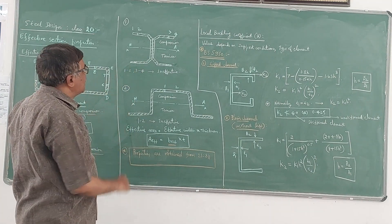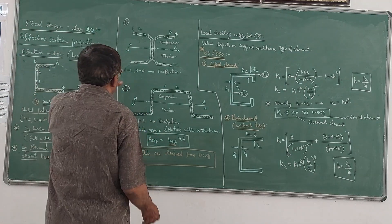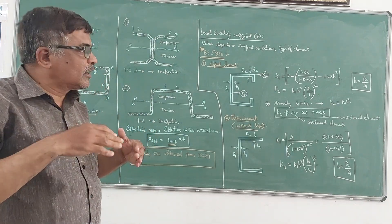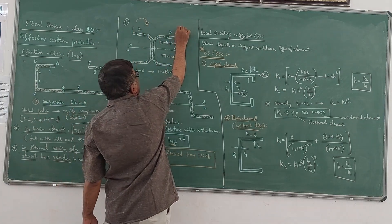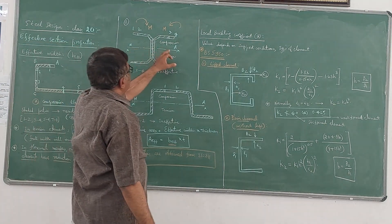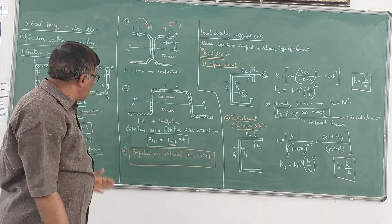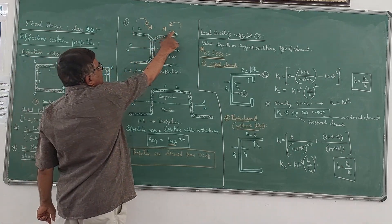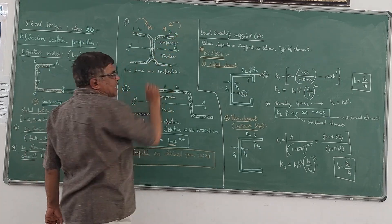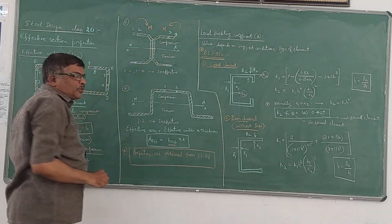Let us take two examples for flexural members. In the case of a simply supported beam, the portion above the neutral axis is subjected to compressive bending stress, whereas the portion below the neutral axis is subjected to tensile bending stress. In the compressive portion, a region labeled 1-2 and 3-4 becomes ineffective, and the remaining hatched portion is taken as effective.